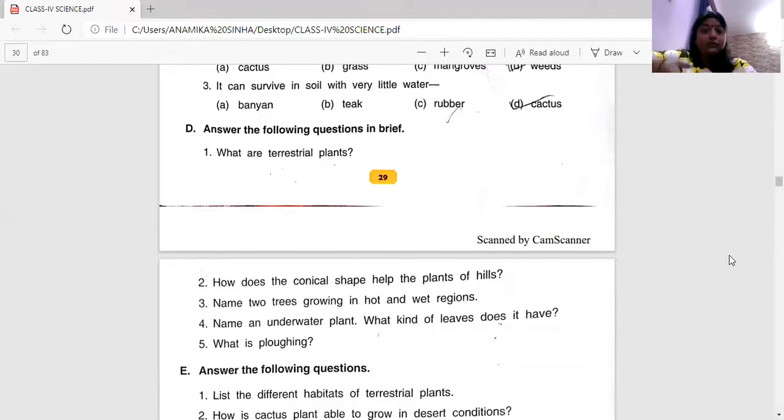What is plowing? The fifth question. Plowing is the method by which the farmers dig the soil. First, they dig the soil and loosen it and make it soft before sowing.